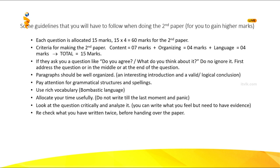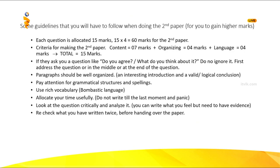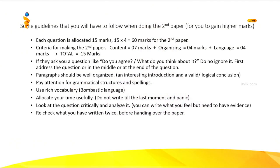Content means all the relevant facts should be there in your paper. You get 7 marks for content — that is the easiest way to gather your marks. For organizing, you get 4 marks. Your answer needs to be well ordered: the beginning, the body, and the end should be there in a nice and attractive way.